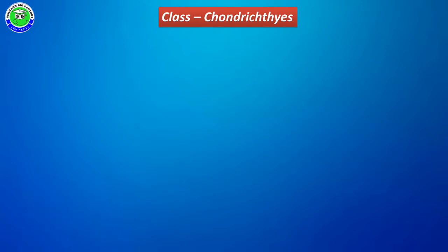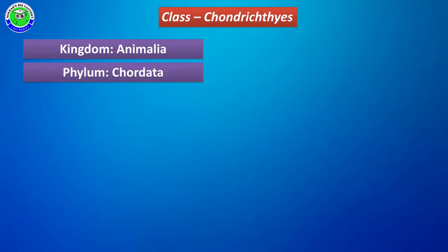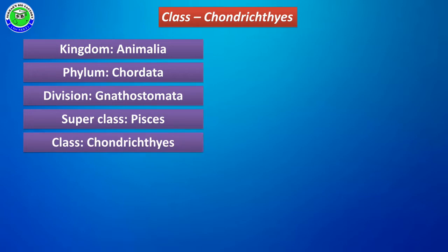In this video, I am going to explain some of the general characters of class Chondrichthyes. It belongs to phylum Chordata. The systematic position of class Chondrichthyes is: Kingdom Animalia, Phylum Chordata, Division Gnathostomata, Superclass Pisces, and class Chondrichthyes.